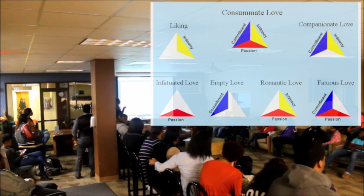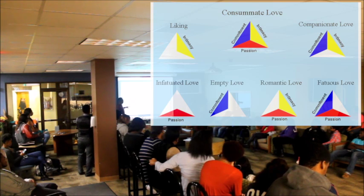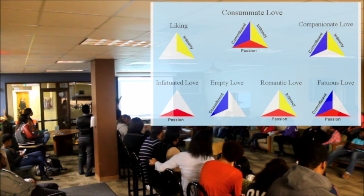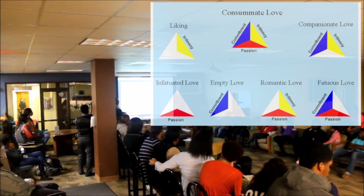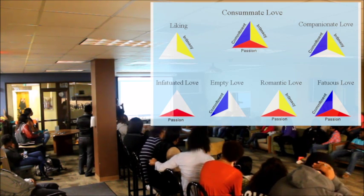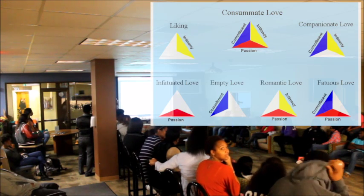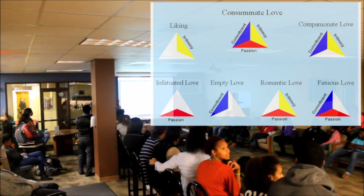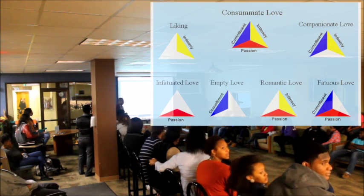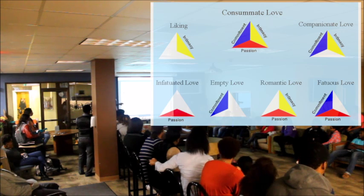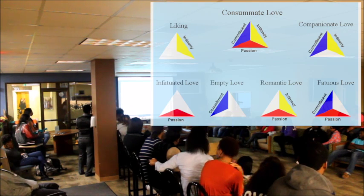According to this, love is the product of what we call consummate love, which is right here. It's a product of three things: intimacy, passion, and commitment. So the thing about this triangle is that in order to have love — the fairytale stuff we all talk about — you have to have all three things working together.